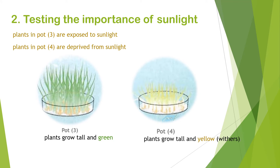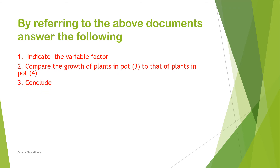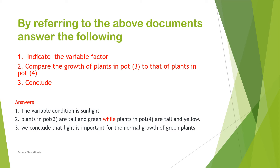We are studying the effect of sunlight. Plants in pot three are exposed to sunlight, but those in pot four are kept in darkness. The variable condition is sunlight. Plants in pot three are tall and green, while plants in pot four are tall and yellow. We can conclude that light is important for the normal growth of green plants.